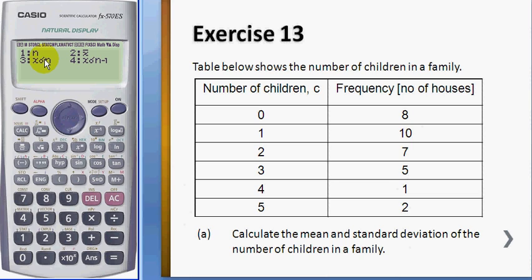The formula that divides by n, you use three, and the formula that divides by n minus one, you use number four. So for sample, normally we will use four, and the standard deviation for this group data is 1.4128.